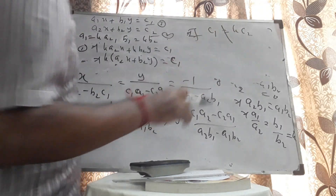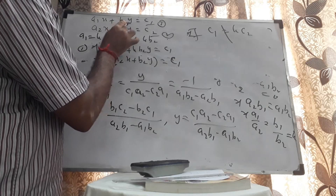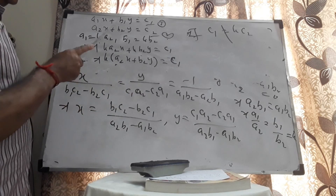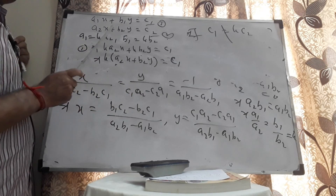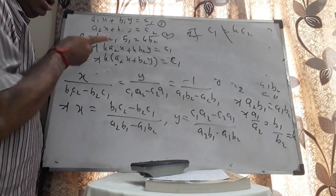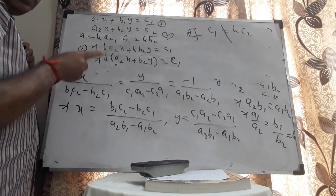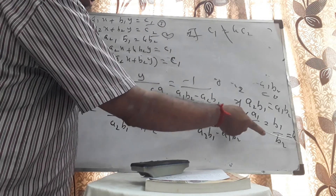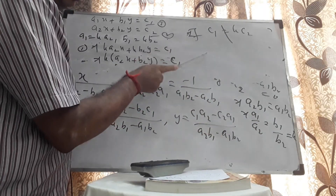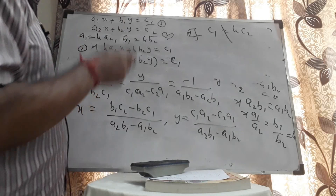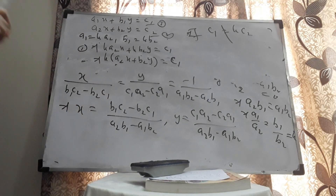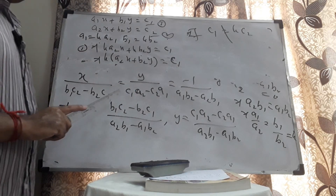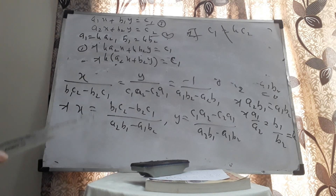By any chance, if C1 is not equal to k·C2, then values satisfying equation 1 will not satisfy equation 2. I cannot represent both equations as the same line, so there is no solution. Therefore, whenever A1/A2 equals B1/B2 but is not equal to C1/C2, there is no solution. In the case of unique solution or infinitely many solutions, the system is consistent; in the case of no solution, the system is inconsistent.